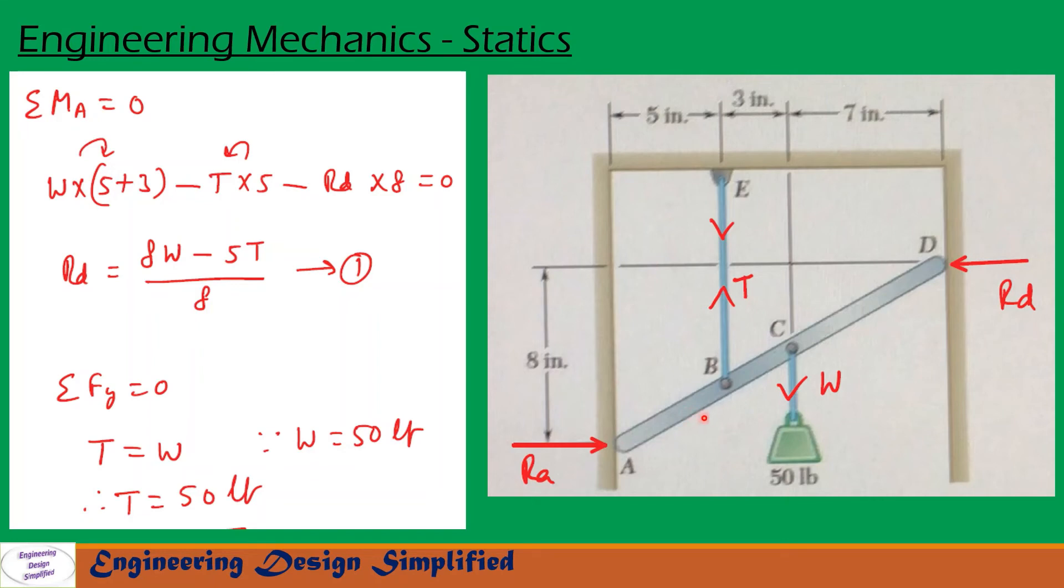Now let us take moments about A. This reaction RA won't create any moment about A. This tension T will create counterclockwise moment, and W will create clockwise moment, and this reaction RD will create counterclockwise moment. Let us write the equation sigma MA equal to 0.